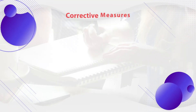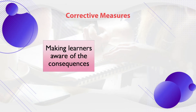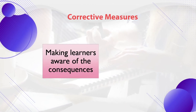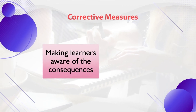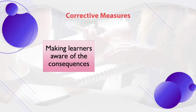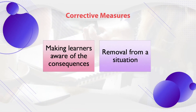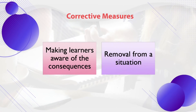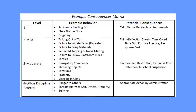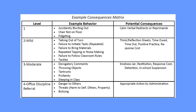Generally when applying a corrective measure, we do two things: we make learners aware of the consequences — what will happen if they do not stop the behavior — or we remove the situation that is creating the problematic behavior. Sprick (2009) suggested a consequence matrix with four levels: initial level, mild level, moderate level, and discipline referral level.